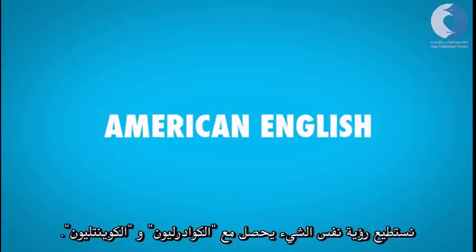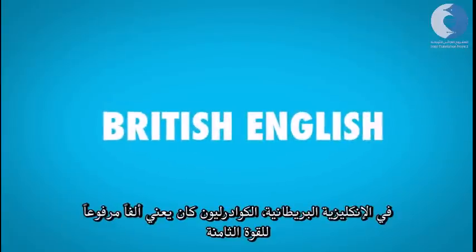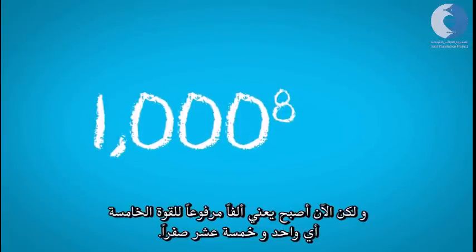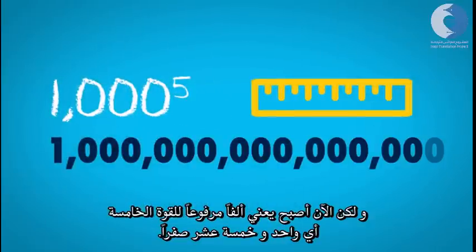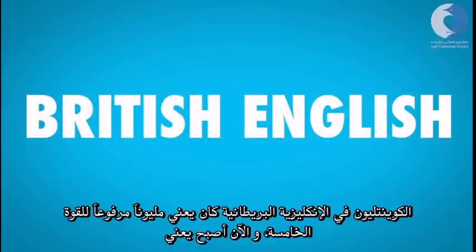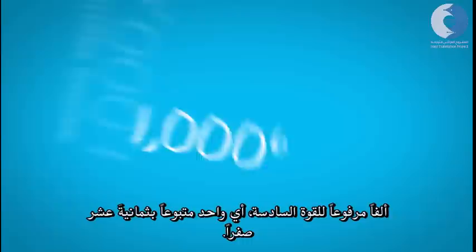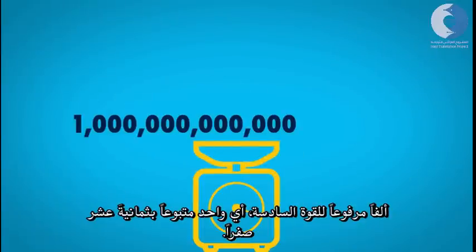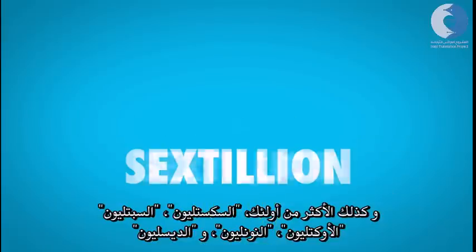We see the same thing happening with quadrillion and quintillion. In British English, a quadrillion used to mean a thousand raised to the power of eight, but it's now taken to be a thousand raised to the power of five, so a one with fifteen zeroes. A quintillion, in British English, used to mean a million raised to the power of five, and is now held to a thousand raised to the power of six — a one followed by eighteen zeroes.